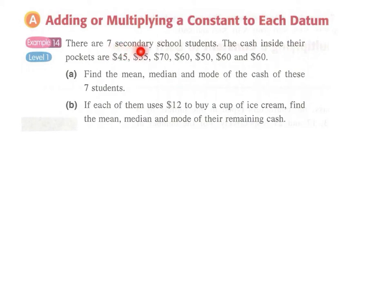Let's say for example we have seven students and each of them has some cash in their pockets. And we have to find the mean, median and mode of the cash of these students.